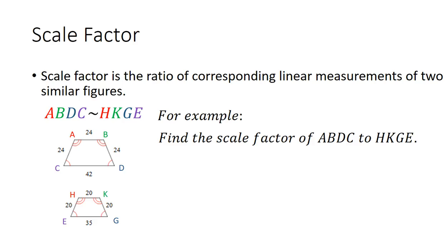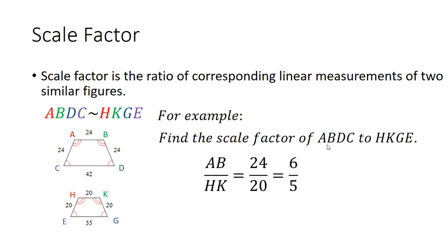I'm going to pick the first two sides: AB and HK, and substitute in those measurements. Side length AB is 24, so I put 24 on top. HK was 20, so I put that on the bottom. I put AB on top because I'm comparing polygon ABDC to polygon HKGE. Then I simplified: 24 over 20 simplifies down to 6 over 5, and that is the scale factor for those polygons.